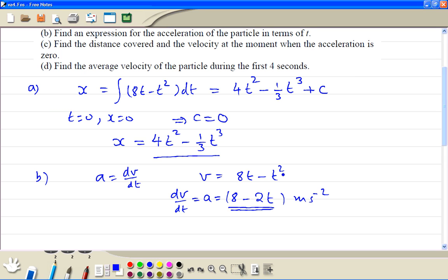Part C: find the distance covered and the velocity at the moment when the acceleration is 0. So when a is equal to 0, this means 8 minus 2t equals 0.